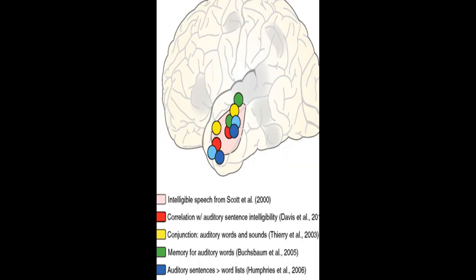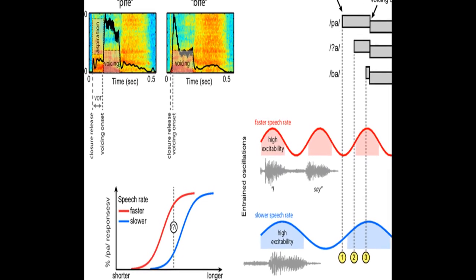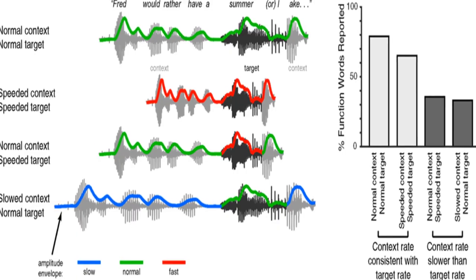The article suggests a framework through which neural entrainment to speech rhythm can explain effects of speech rate on word and segment perception.